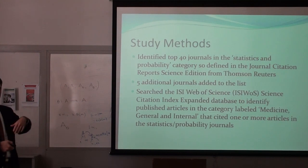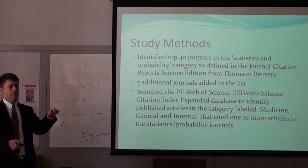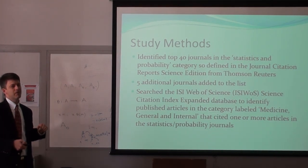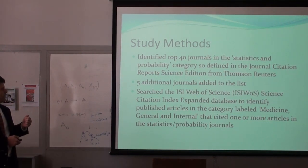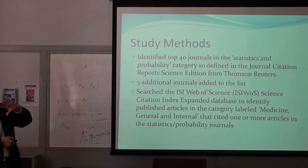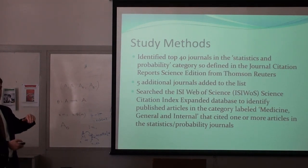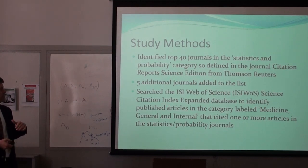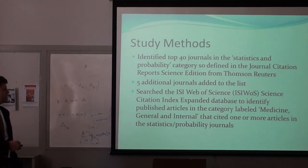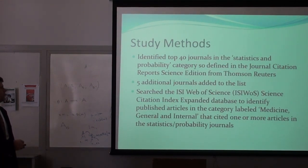We picked the top 40 journals and I sent that list around to some colleagues. They suggested a couple more names, so we added five to the list, giving us 45 journals. Then we looked in the Web of Science Citation Index — a big database that can identify all articles published in what they call the Medicine, General, and Internal category that cited one or more articles in the statistics and probability journals.